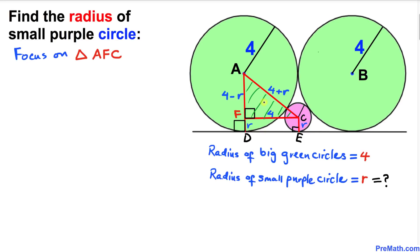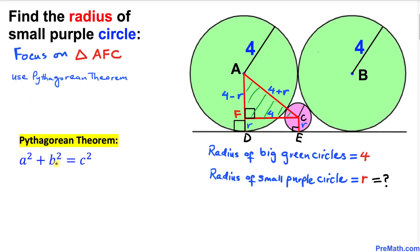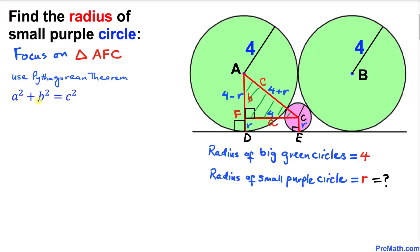Now let's focus on triangle AFC, which I have just shaded. We know this is a right triangle, so we are going to use the Pythagorean theorem: a squared plus b squared equals c squared. In our case, the hypotenuse AC is side c, the horizontal side AF is a, and the vertical side FC is lowercase b.